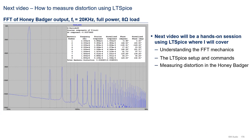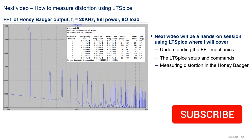Our next video will be a hands-on session using LTSpice where we look at how to measure distortion in simulation. We will understand the FFT mechanics, the LTSpice setup and associated commands, and as a demonstration, we will be measuring the distortion in the Honey Badger amplifier. If you have any questions, feel free to write them in the comments below. If you liked this content and want to get notified when the next video is available, please subscribe and hit the thumbs up button. Thanks for watching — until next time, goodbye.